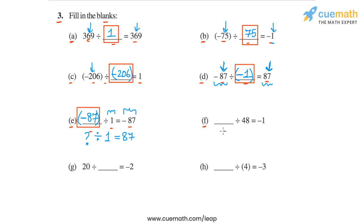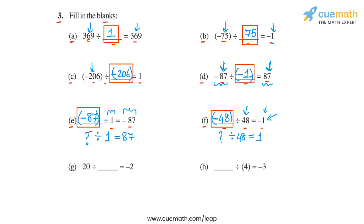Then going to part f, we have blank divided by 48 is equal to minus 1. Ignoring the negative sign, think about what integer when divided by 48 gives us 1. That number is 48. Then we see that because the divisor is positive but the quotient is negative, the dividend must be negative as well. So we must have minus 48 here. Minus 48 is the answer for part f.